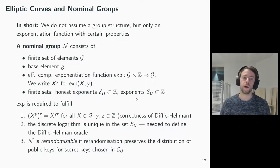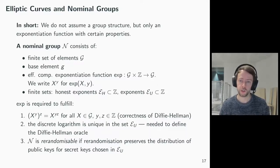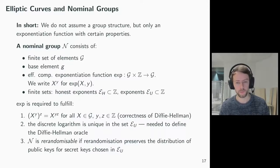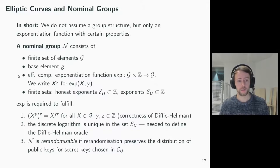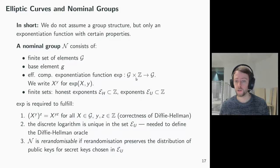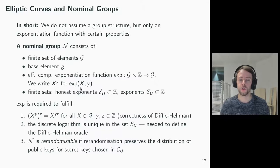First, a short summary. In nominal groups, we do not assume a group structure, but only an exponentiation function with certain properties. A nominal group N consists of a finite set of elements G, a base element g, an efficiently computable exponentiation function exp from G cross Z to G — we write x to the y for exp(x, y) — and finally two finite sets: the set of honest exponents EH and the exponents EU, both subsets of Z.